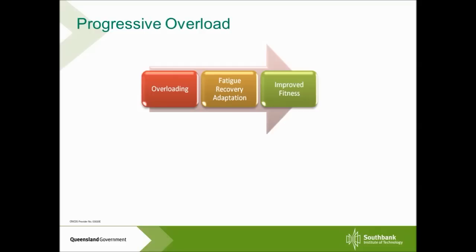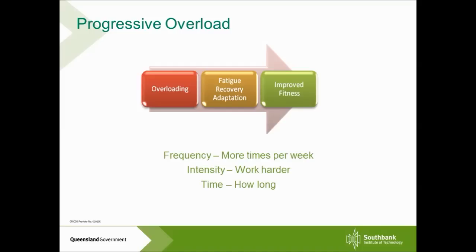We can overload the body in four major ways. First, by increasing the frequency — the number of times per week a person is working out. Another way is to increase the intensity, or how hard the person is working. Thirdly, the time, or how long the person is working. Lastly, we may change the type of exercise, making it a more complex or harder version. Any of these formats of overloading can cause adaptations and improvements in our clients. This is referred to as the FITT principle — Frequency, Intensity, Type, and Time.